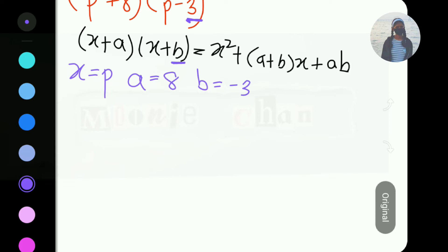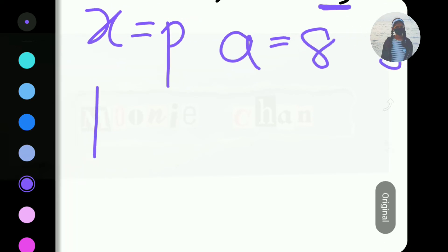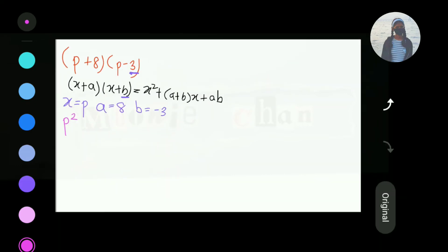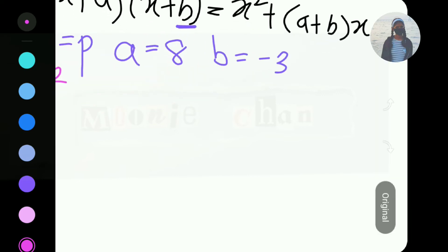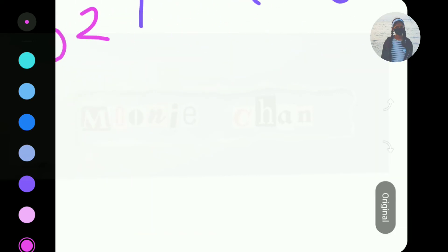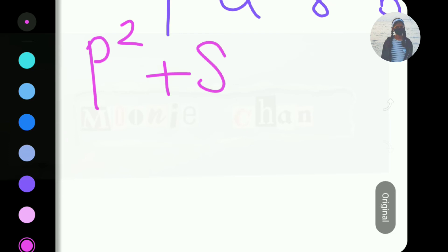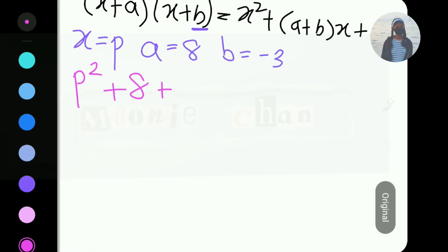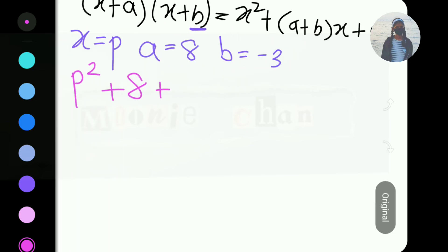So, X square. We can write X square but we will write it as P square because X equals to P, right? So, we'll write plus A plus B. Now, what is A? A is 8. So, we'll write plus 8 plus what is B? It is minus 3. Minus 3.